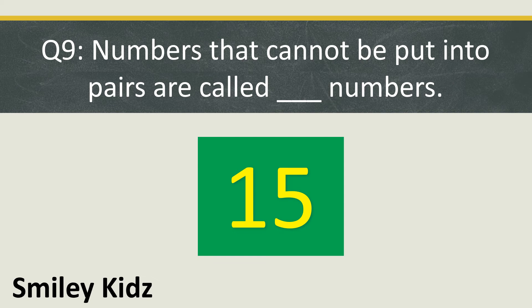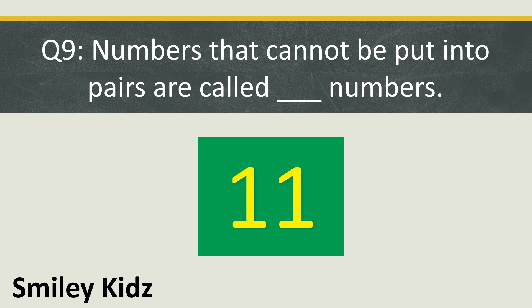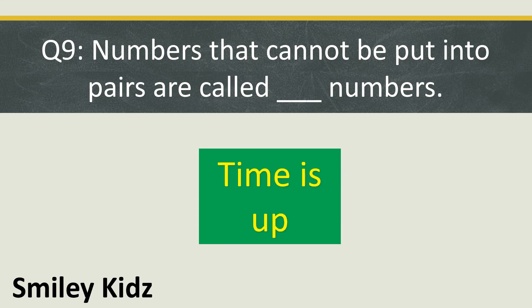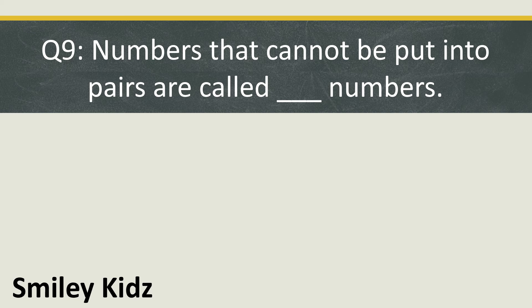Question number 9: Numbers that cannot be put into pairs are called blank numbers. Your time starts now. Your time is up. The right answer is odd. Numbers that cannot be put into pairs are called odd numbers.